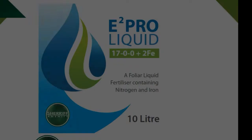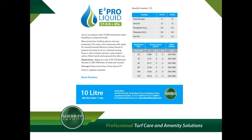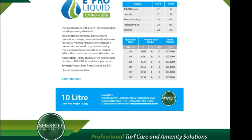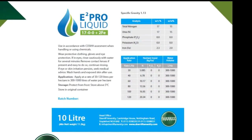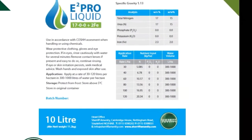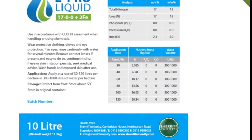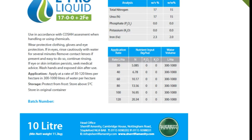It is then a very simple process of multiplying 1.7 times the application rate. For example, 1.7 times 3 containers, or 3 times 10 liters, will equal 5.1 kilograms per hectare of nitrogen.